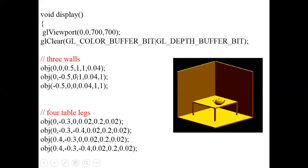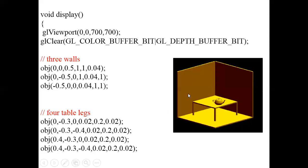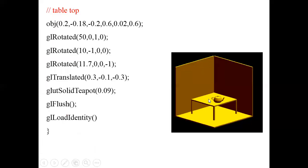Since I have to draw three walls, I call the object function three times — one with translation along Z, one with negative Y value (-0.5), and one with negative X axis translation (-0.5). For the four table legs, I call the object function four times, with each call drawing one table leg. After the three walls and four legs, I call the object function once more with different translation and scaling parameters to construct the table top.